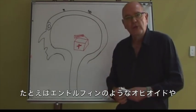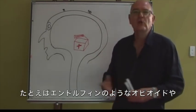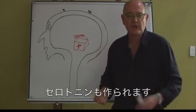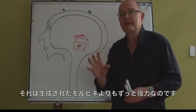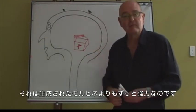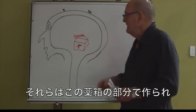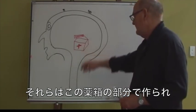For example, you can make opioids like endorphins and enkephalins. You can make serotonin. Your brain can even make morphine, and it's a morphine that's much more powerful than mankind can make. And these are made in this remarkable drug cabinet.